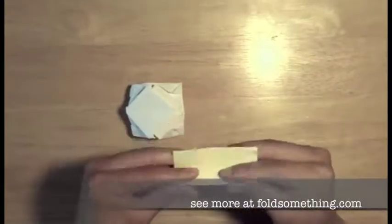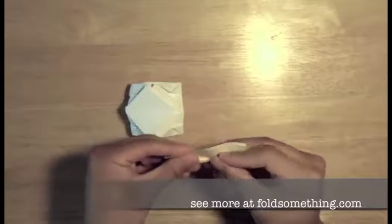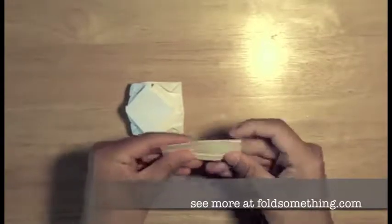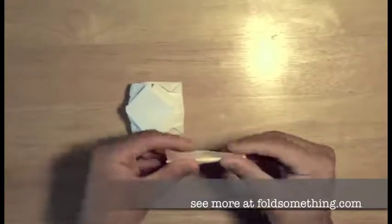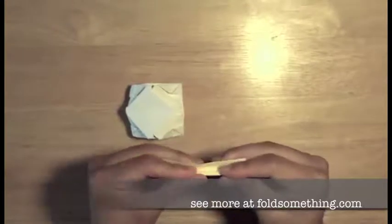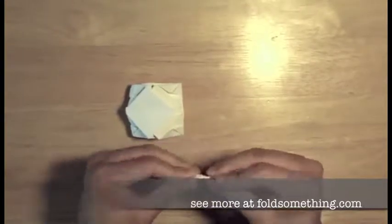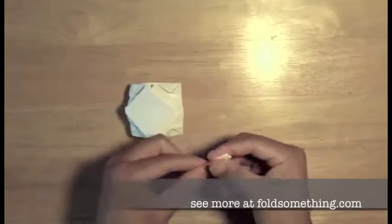And of course, you don't have to use a post-it note. You can use the same color paper or even something like a straw or a toothpick. If you actually use a straw, you can poke it all the way through the back of the tank and use it to shoot spitballs.